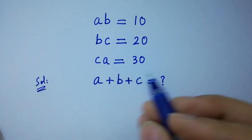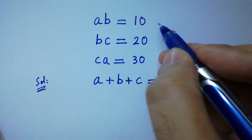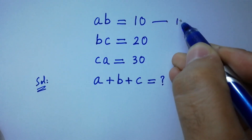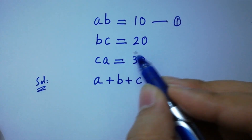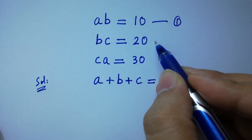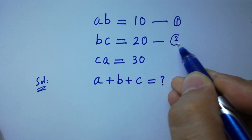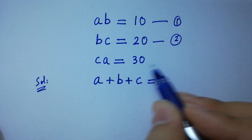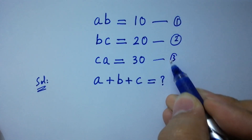Let's suppose that ab equal to 10 is the first equation, bc equal to 20 is the second equation, and ca equal to 30 is the third equation.